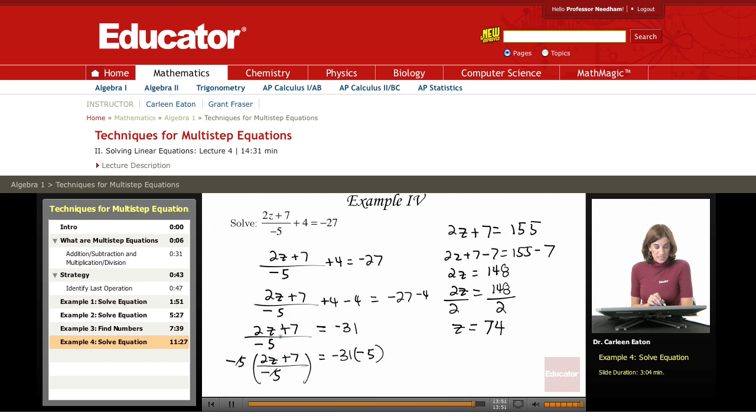Then we were left with 2z plus 7 divided by negative 5 equals negative 31. The next thing to eliminate was that negative 5 by multiplying negative 5 from both sides, finally giving us 2z plus 7.